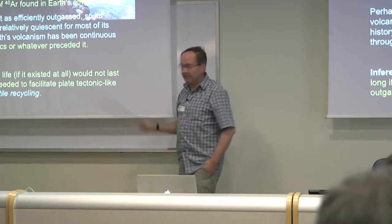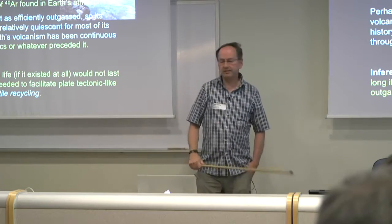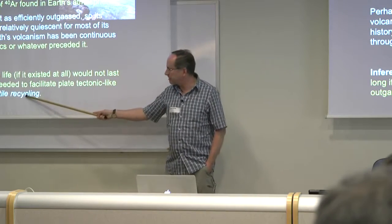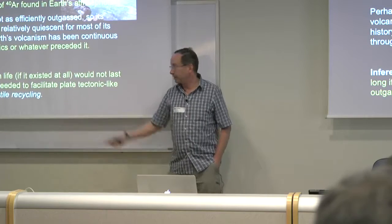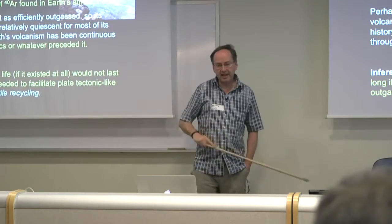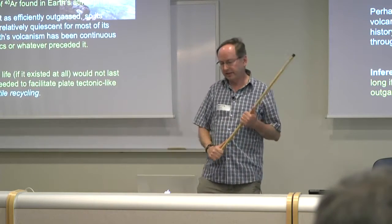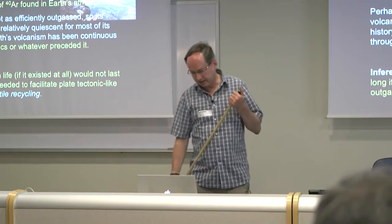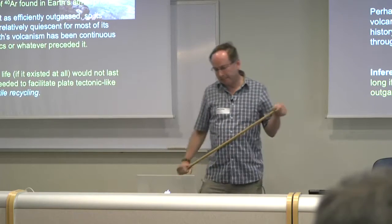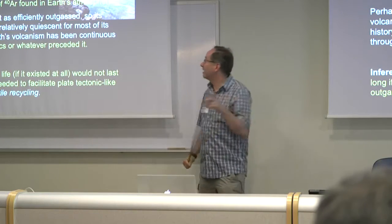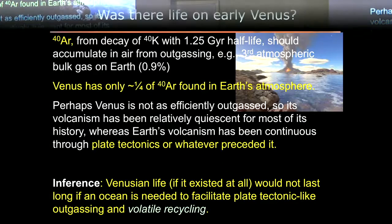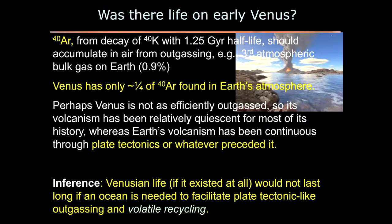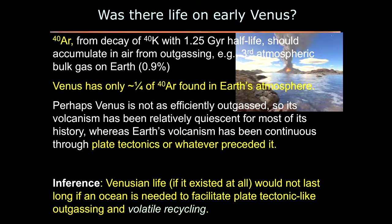Whatever style of tectonics Venus had, it wasn't as efficient at getting argon-40 out as Earth's. So if there was life on early Venus, and if we believe volatile recycling is needed to sustain life, then Venusian life — if it existed at all — probably didn't last long, because the conditions for volatile recycling were unnecessarily short, based on just looking at noble gases.